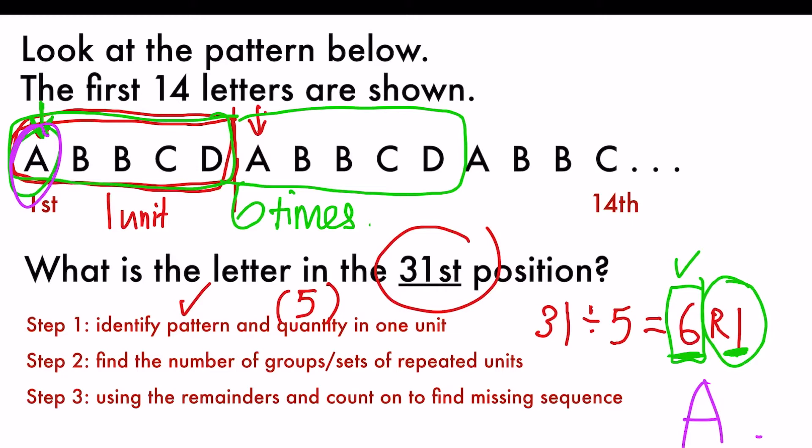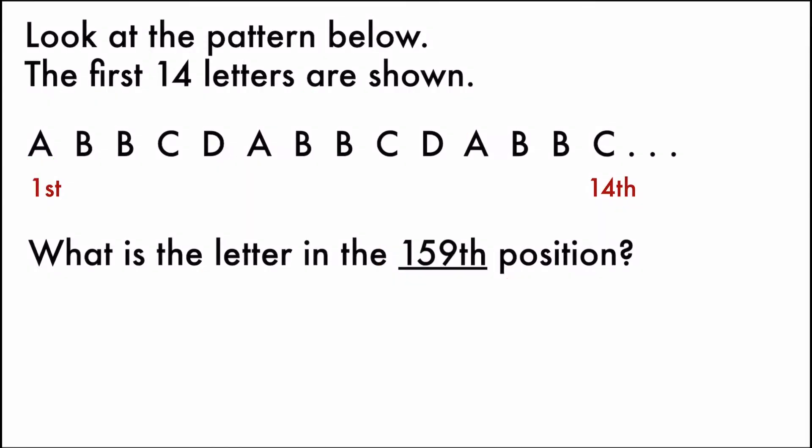So now let's try with a bigger number, but with the same three steps. Let's try with this same question, but to find the 159th position, which is a larger number than the previous one. So step number one, we have to identify the pattern, which we have already done just now. The pattern is A, B, B, C, D, repeated and so forth. And the quantity in one unit is 5. There are five letters in one pattern.